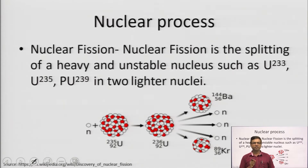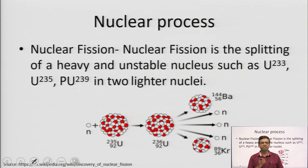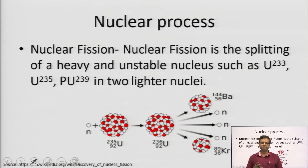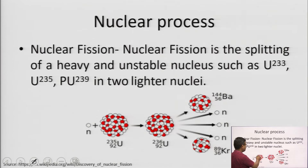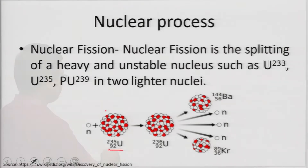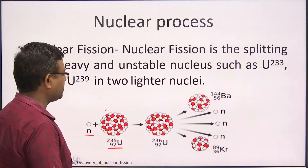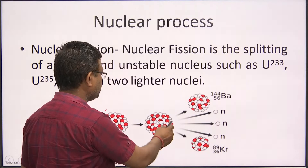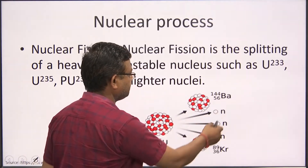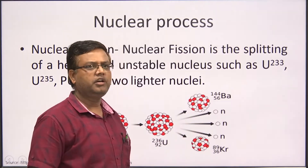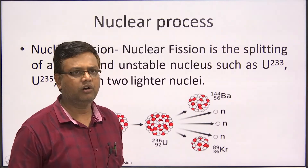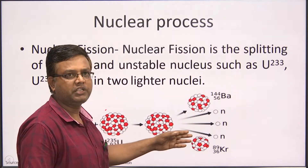What is nuclear fission? Nuclear fission is the splitting of a heavy unstable nucleus — such as uranium-233, uranium-235, or plutonium-239 — into two or more lighter nuclei. For example, uranium-235 is bombarded with a neutron. It first converts into uranium-236 and then splits into krypton and barium. On average, in one such reaction there are approximately 2.5 neutrons released.